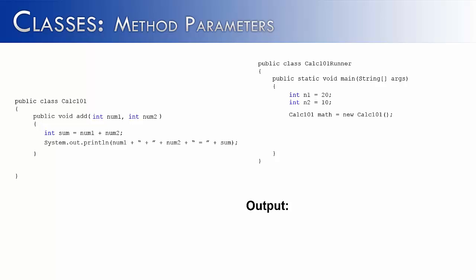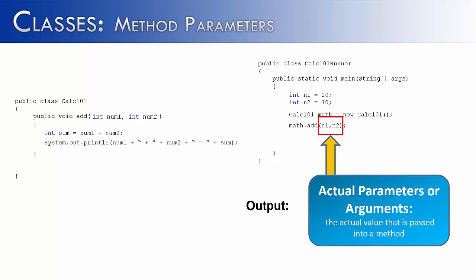Once added, I'm going to display a result for the user, printing out the first and second values with a plus sign in between, and then equals whatever the value of sum is. We've finished our add method, so let's go back to the runner class and utilize it. We do that by using the object math, and then calling the method add, passing in the two variables n1 and n2. These parameters also have a name — they're called actual parameters or arguments.